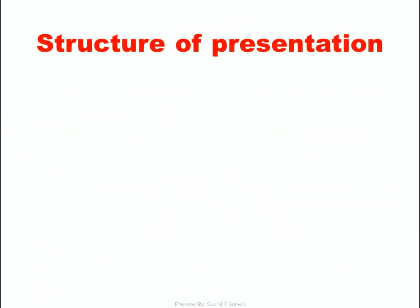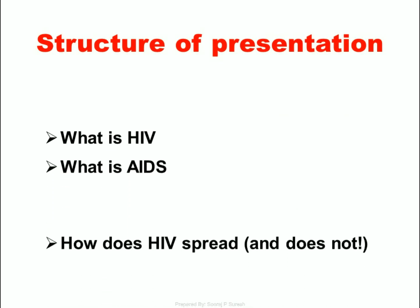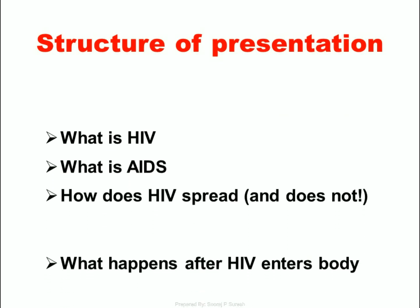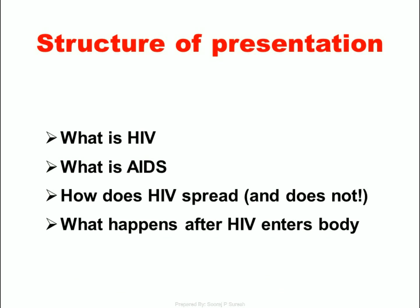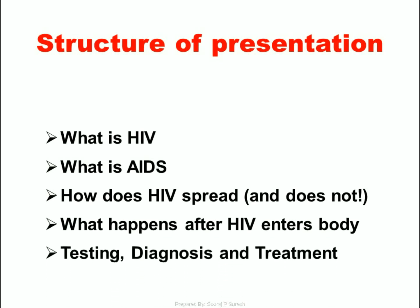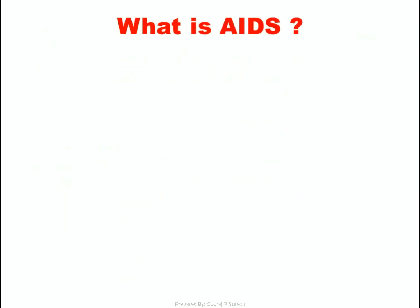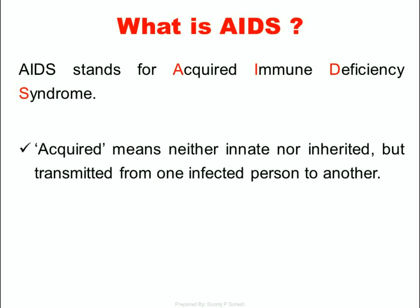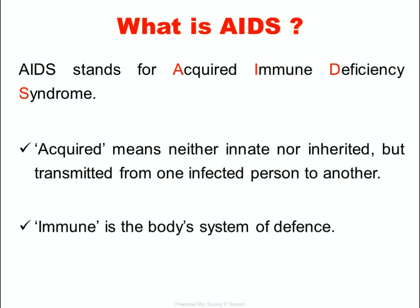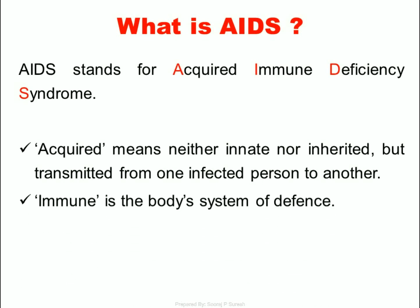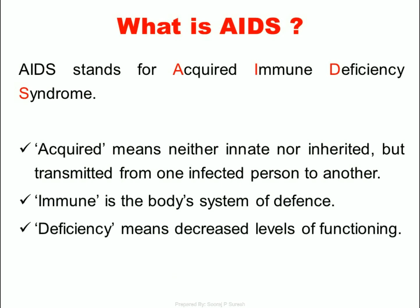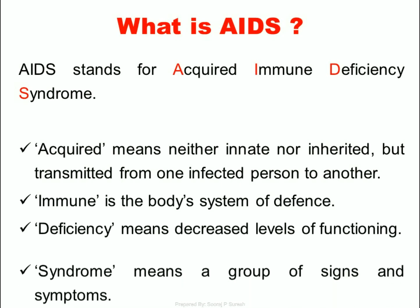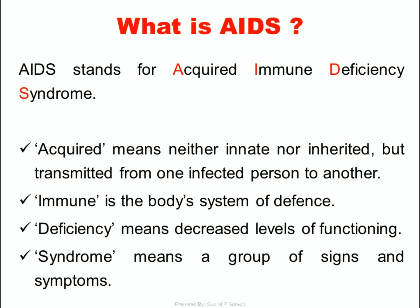Structure of Presentation: What is HIV? What is AIDS? How does HIV spread, and how does it not? What happens after HIV enters the body? Testing, diagnosis, and treatment. AIDS stands for Acquired Immune Deficiency Syndrome. Acquired means neither innate nor inherited, but transmitted from one infected person to another. Immune refers to the body's system of defense. Deficiency means decreased levels of functioning. Syndrome means a group of signs and symptoms.